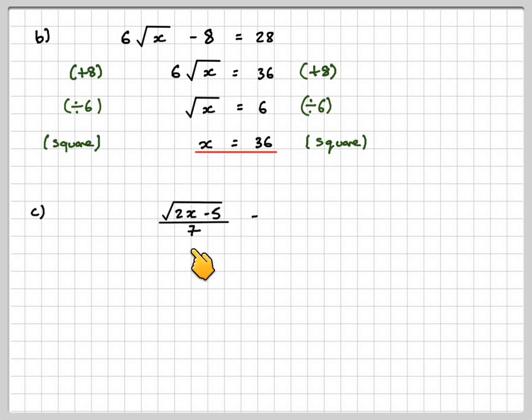Part C: square root of 2x minus 5 over 7. The square root is only over the numerator. The first step is to multiply both sides by 7. So we get the square root of 2x minus 5 equals 3 times 7, which is 21.